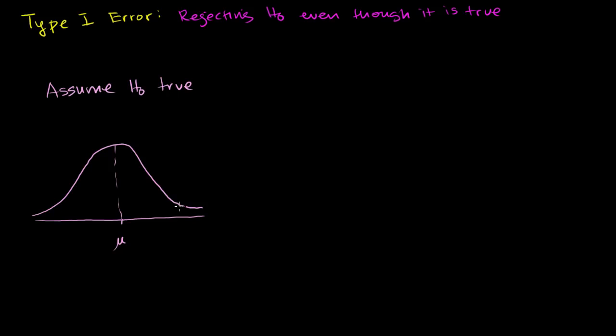So let's say that the statistic gives us some value over here. And we say there's only a 1% probability of getting a result that extreme or greater. And then if that's low enough of a threshold for us, we will reject the null hypothesis.